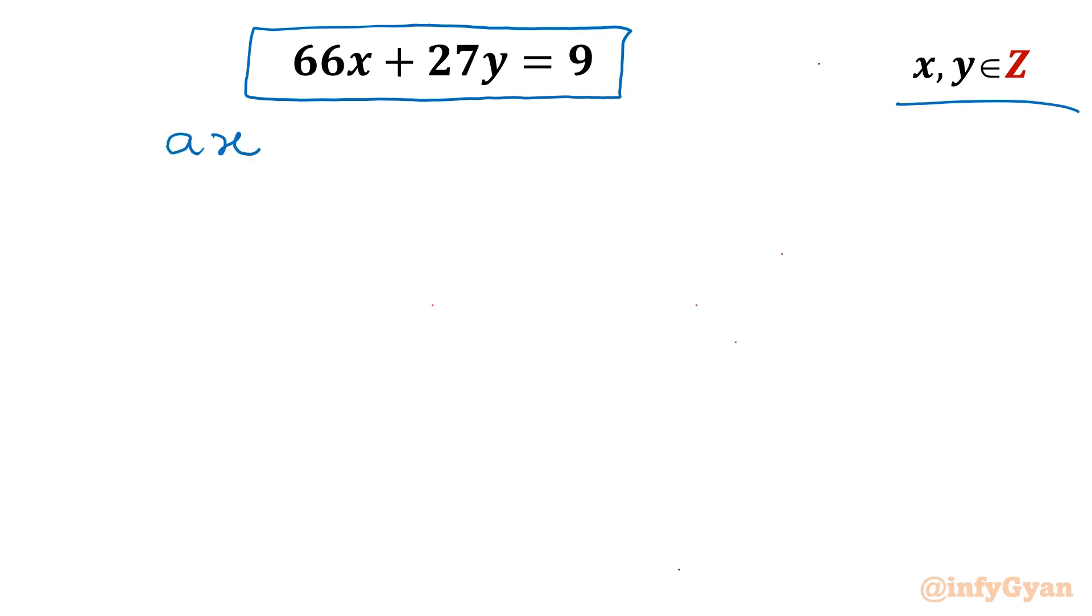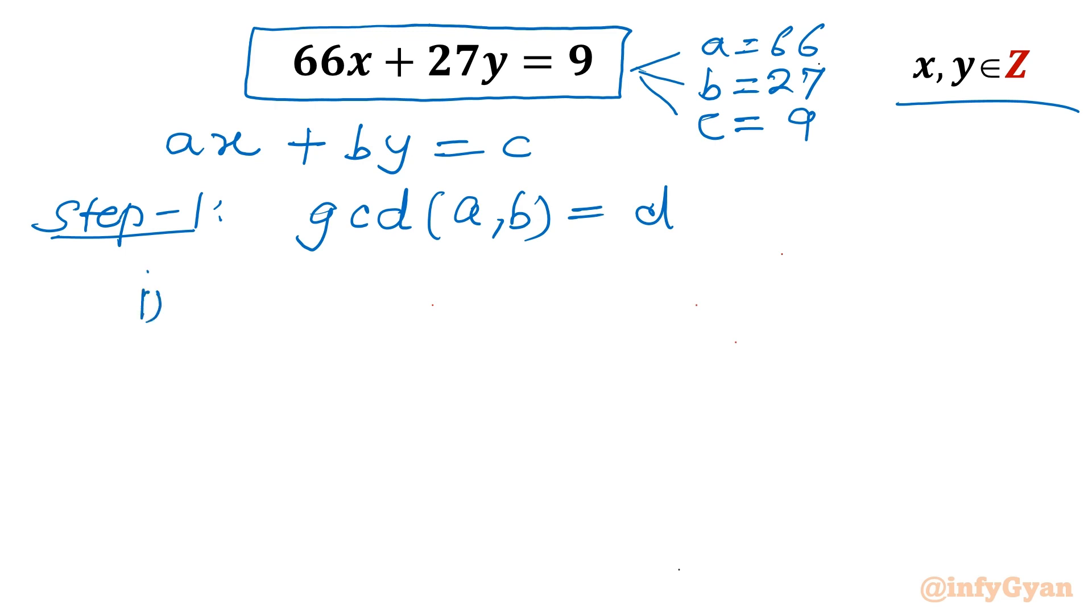Let us consider one general linear equation Ax plus By equal to C. So as per our problem, A equal to 66, B equal to 27, and C equal to 9. Now step number 1: find out GCD between numbers A and B. If it is D, then first check whether D divides C or not. If D divides C, then there will be infinitely many solutions. But if D doesn't divide C, then there won't be any solution.